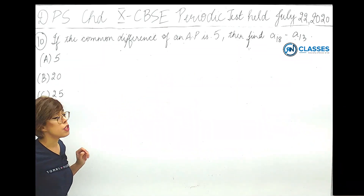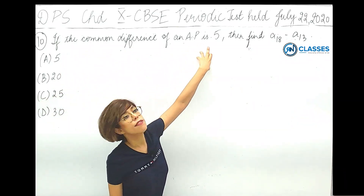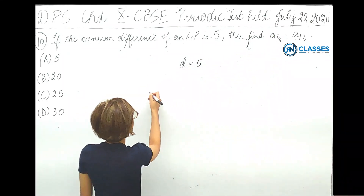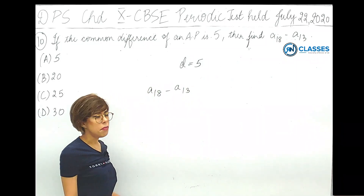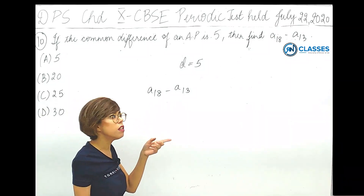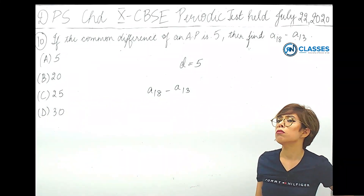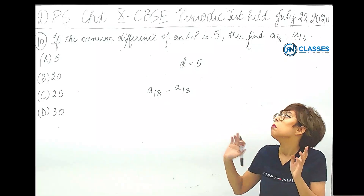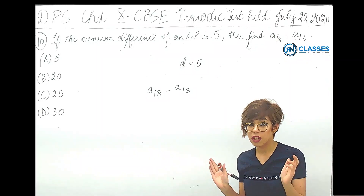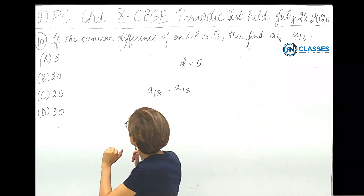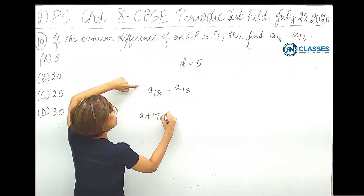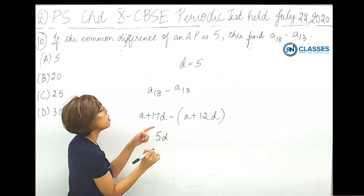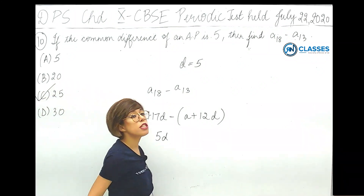The next question: if the common difference of an AP is 5, find A18 minus A13. From the 13th term to the 18th term there are 5 common differences added, so A18 minus A13 equals 5 into d equals 5 into 5 equals 25. Using the formula: A18 equals a plus 17d, A13 equals a plus 12d, so A18 minus A13 equals 5d equals 25. Option C is correct.